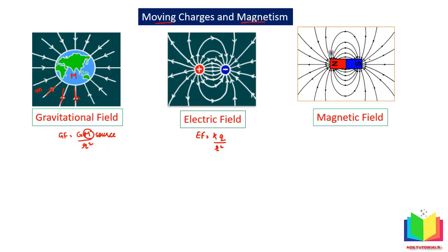To conclude, we can say that the source of gravitational field is mass, the source of electric field is charge, and the source of magnetic field is a magnet.